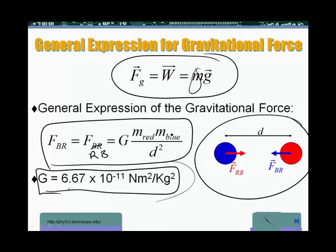And the mass of the first object times the mass of the second object, essentially the product of their masses, divided by the distance separating them squared.